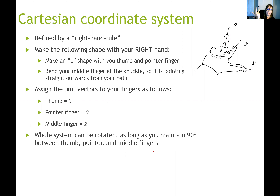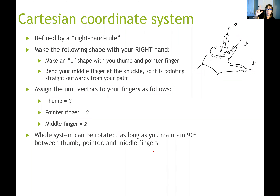Any way you rotate your hand, the Cartesian coordinate system is allowed to rotate with it. X-hat doesn't always have to point horizontally, and y-hat doesn't always have to point vertically. As long as you maintain this shape and the 90-degree angles between your pointer, middle finger, and thumb, you have an acceptable Cartesian coordinate system. Let's test our right-hand rule capabilities with some examples.